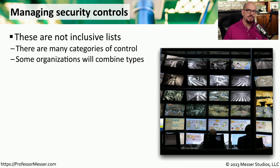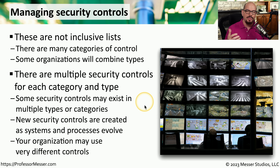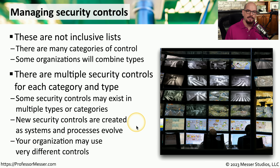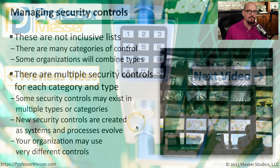The examples I provided for the different security controls and the categories where they fit are simply one single example. You can probably think of a number of different examples that could fit into any of those squares in our matrix. You could also think of different security controls that might fit into a different category or type of control. And as our technology changes and security processes evolve, there might be new control types that we could fit into our chart. Not everybody uses the same security controls, so the ones you use in your organization may be very different than someone else's organization.